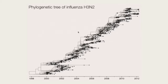Looking at this tree from a vaccination perspective — say we're in 2006 — we'd have the choice of these different clades to vaccinate with. We want to pick the right clade, maybe this clade, the one that wins, rather than the ones that die out.